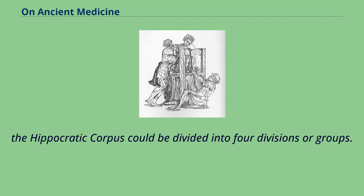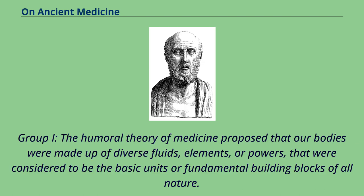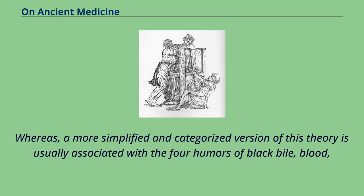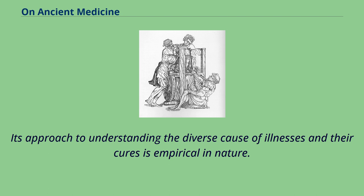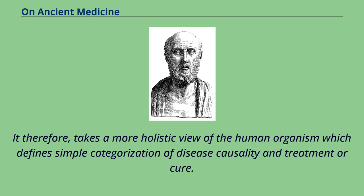The Hippocratic Corpus could be divided into four divisions or groups. Group 1, the humoral theory of medicine, proposed that our bodies were made up of diverse fluids, elements, or powers considered to be the fundamental building blocks of all nature. A more simplified version of this theory is usually associated with the four humors of black bile, blood, phlegm, and yellow bile. The humoral theory as presented in Group 1 is never structured or schematized; its approach to understanding illness and their cures is empirical in nature, taking a more holistic view of the human organism which defies simple categorization of disease causality and treatment.